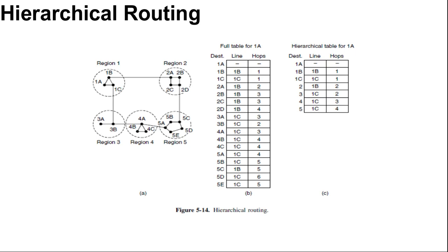As the network grows in size, the router routing tables grow proportionally. Not only is router memory consumed by routing tables, but more CPU time is needed to scan them. The bandwidth is needed to send status reports about them. At a certain point, the network may grow to a point where it is no longer feasible for every router to have entries for every other router.